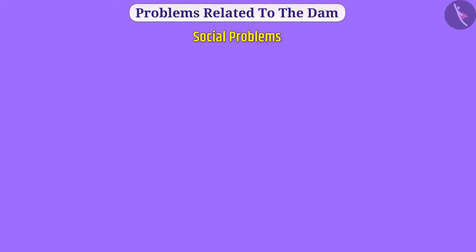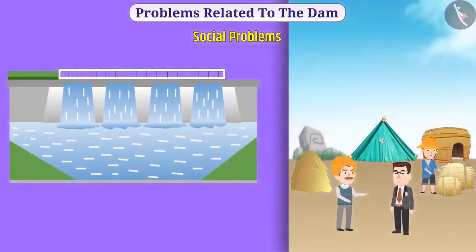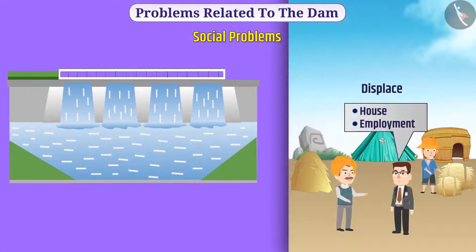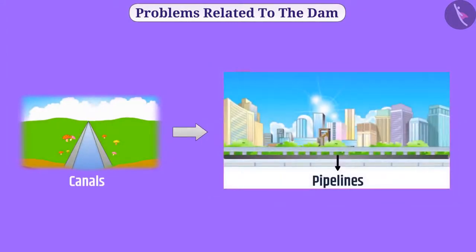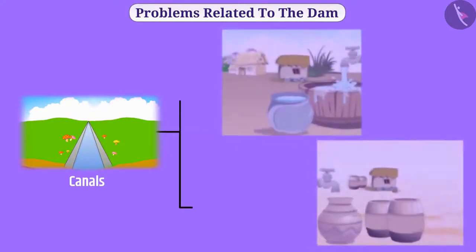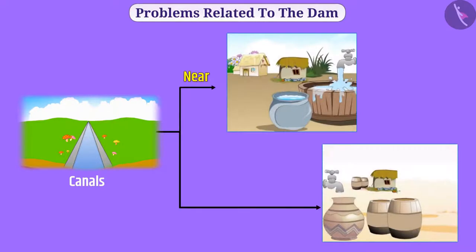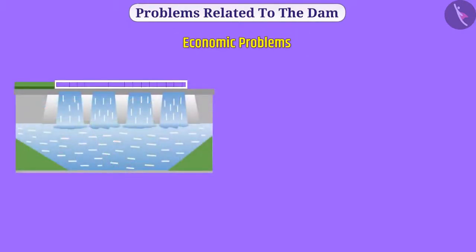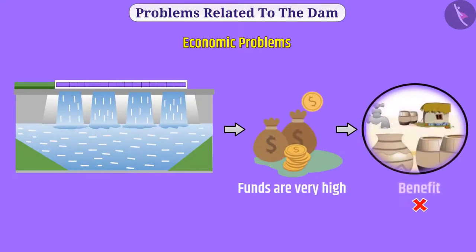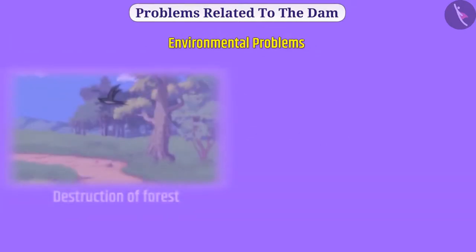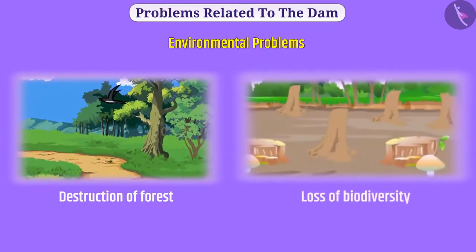There are some problems related to dams. Social problems: for building dams, large numbers of farmers and tribals are displaced, and promises made while displacing them are not fulfilled. Though canals transport water to distant locations, there is no uniform distribution — those near the dam use excessive water while people far away are deprived. For large projects, public funds are very high but the benefit is less or none. Environmental problems: large-scale destruction of forest wealth results in loss of biodiversity.